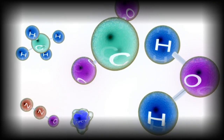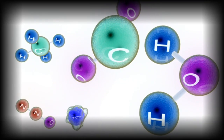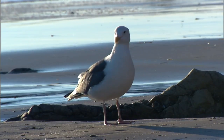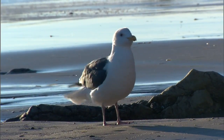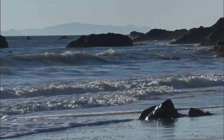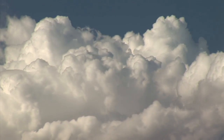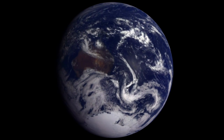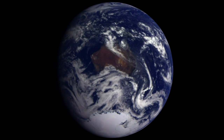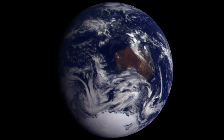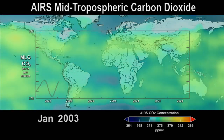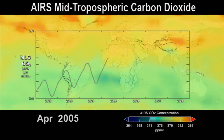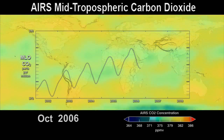Carbon is the basic building block of life and these unique atoms are found everywhere on Earth. Carbon makes up the Earth's plants and animals, and carbon is also stored in the ocean, the atmosphere, and the crust of the planet. A carbon atom could spend millions of years moving through the Earth in a complex cycle. Understanding the carbon cycle and how it is changing is key to understanding Earth's changing climate.